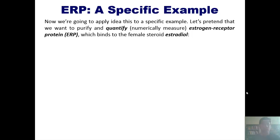To begin, I want to throw at you a specific example. Let's pretend that you want to purify and quantify, which is a fancy word meaning numerically measure, estrogen receptor protein, or ERP, which happens to bind to the female steroid estradiol, whose structure is shown here. If you wanted to be able to measure the amount of ERP that a patient, for example, has in his or her blood, how would you go about doing that?